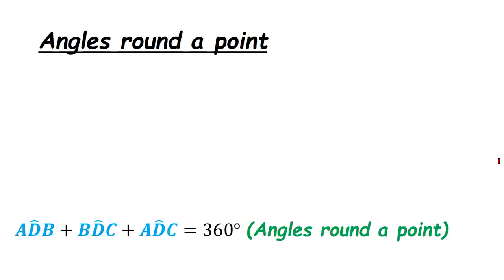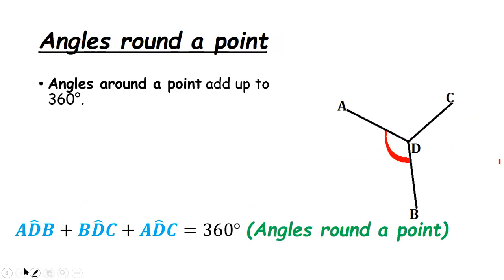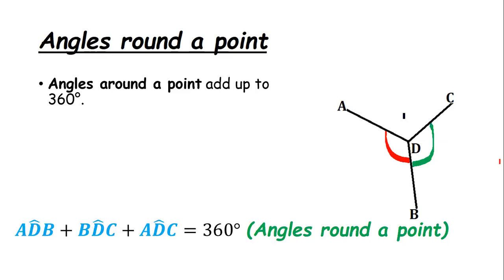Angles around a point add up to 360 degrees. In this diagram we've got three angles: angle AB, plus angle BDC, plus angle ADC — they all add up to 360 degrees. So we say: angles around a point.